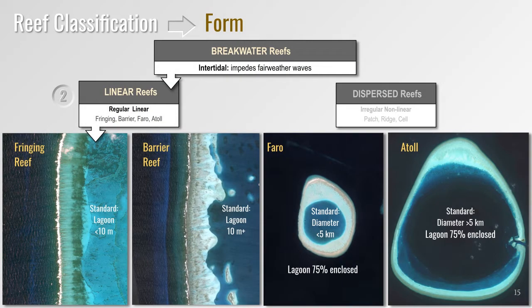The second step divides breakwater reefs on the basis of form into either linear or dispersed categories. Linear breakwater reefs are well organized and have linear or curvilinear forms consisting of four main types: fringing reefs, barrier reefs, farrows, and atolls. Fringing reefs are standardized to have lagoons shallower than 10 meters depth, whereas barrier reef lagoons are standardized to be 10 meters or deeper. Farrows are standardized to have a diameter of less than 5 kilometers with the breakwater reef enclosing 75% or more of the lagoon, whereas atolls have diameters of 5 kilometers or more with the reef enclosing at least 75% of the lagoon.